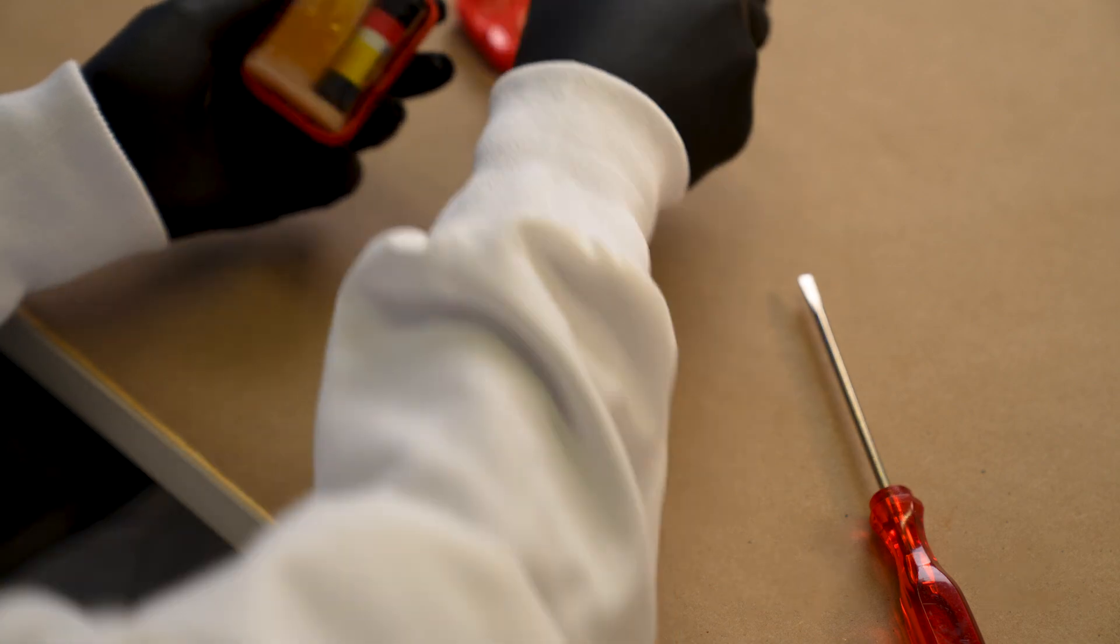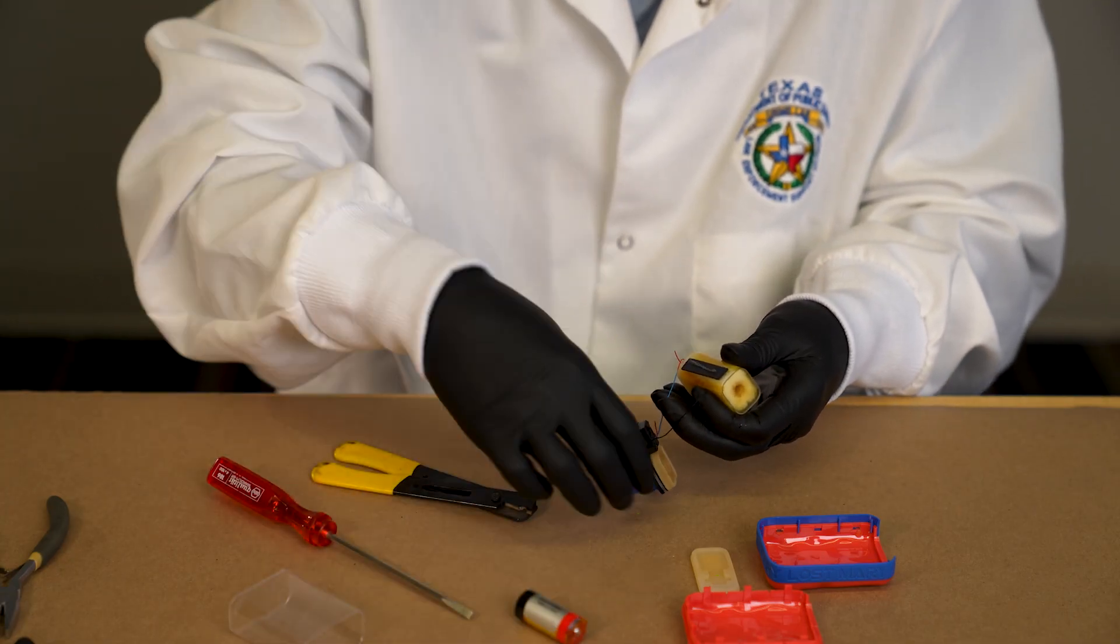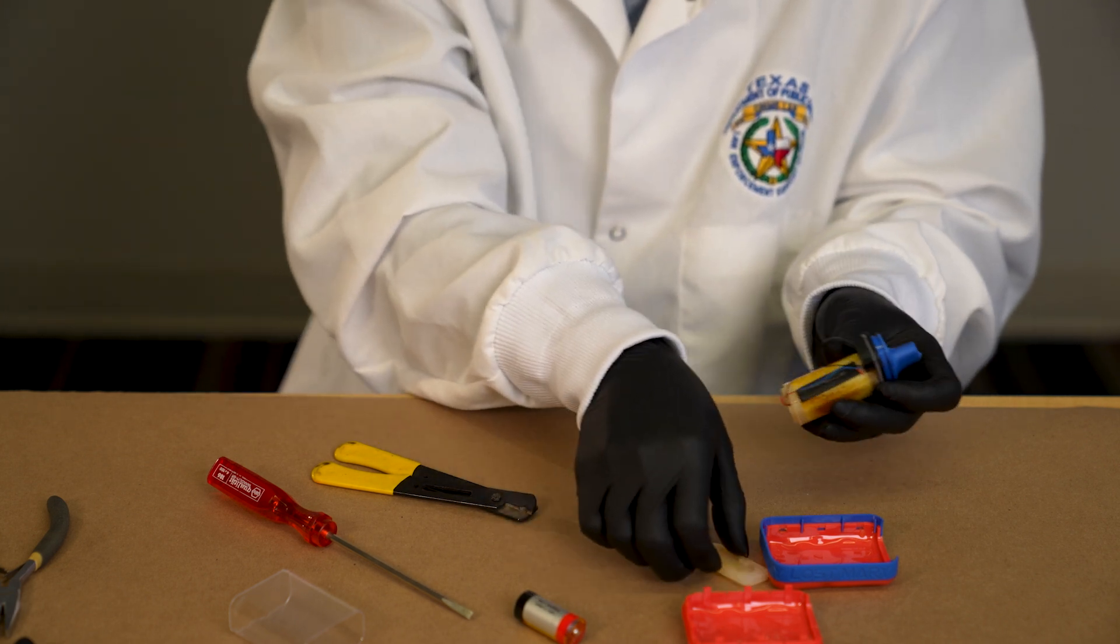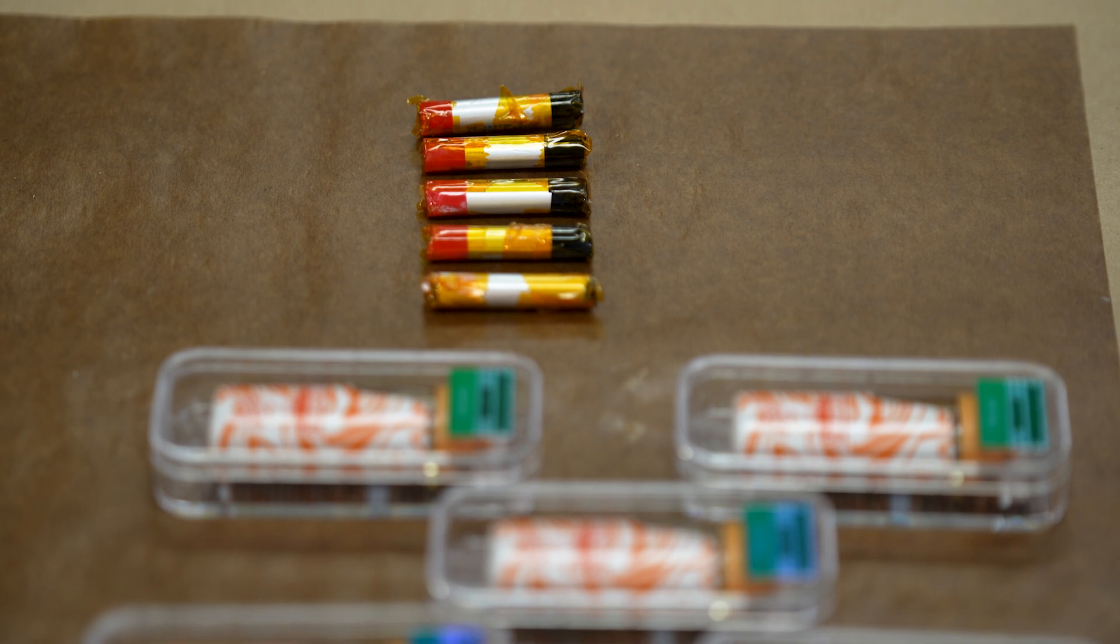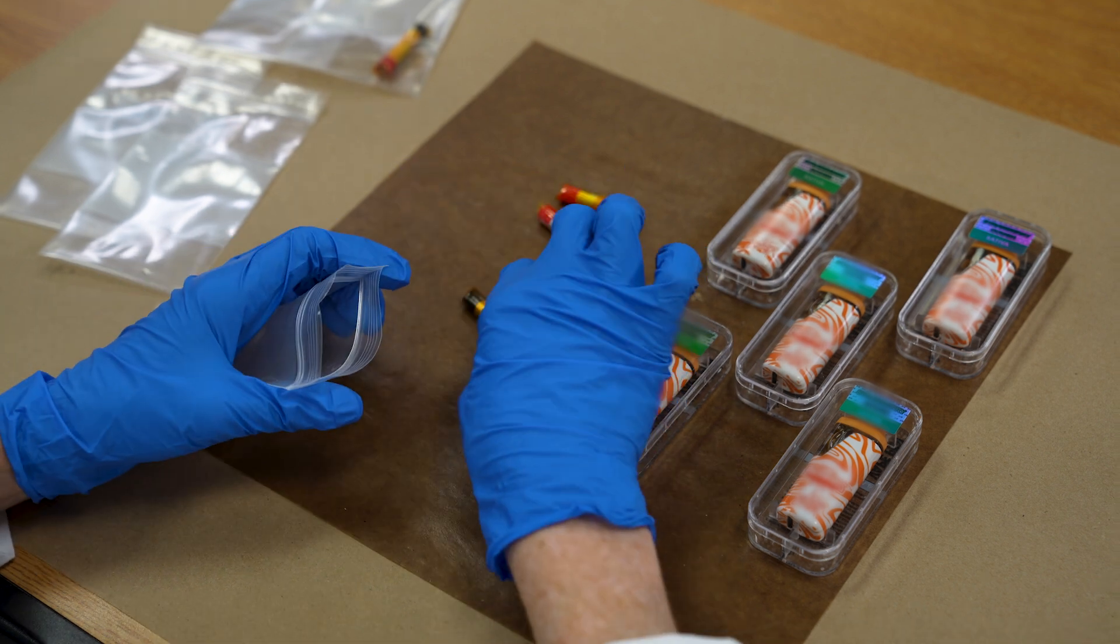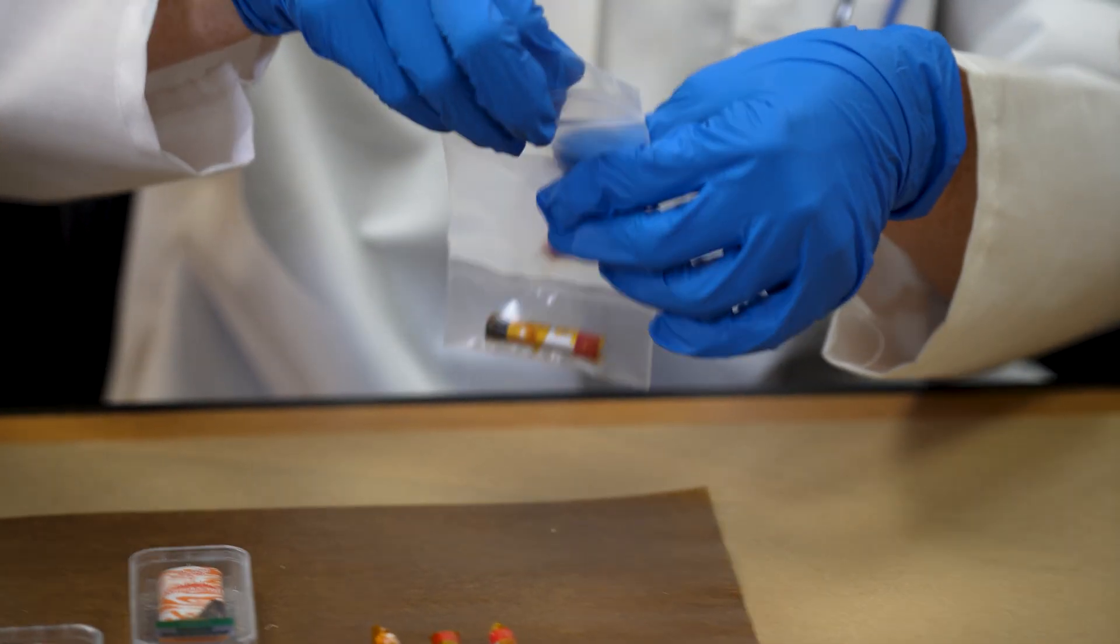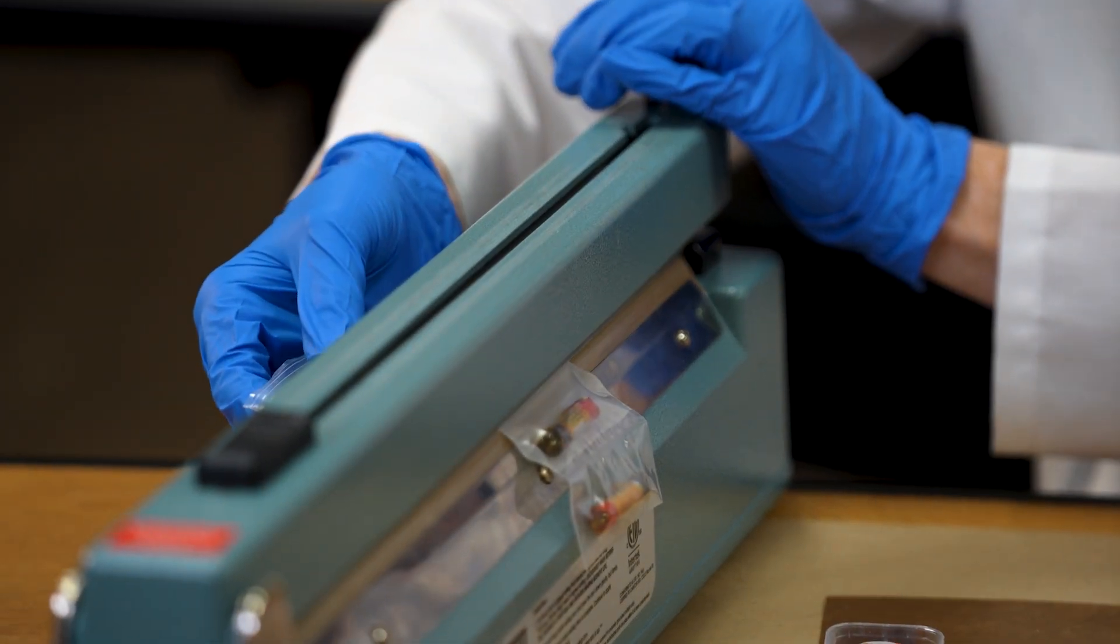Now that the batteries have been removed from these electronic smoking devices, the next step is properly disposing of these batteries. Due to the safety risks associated with lithium batteries, it is important to package them separately from each other. You can do that by packaging them into individual sealable plastic bags. To conserve, you can use a large plastic bag and segregate the individual batteries with a heat sealer.